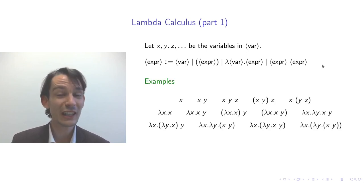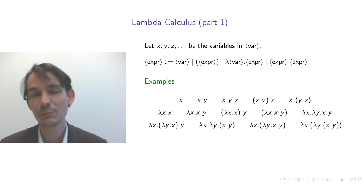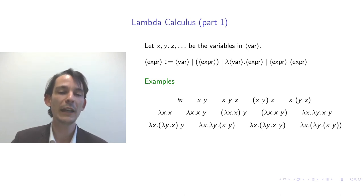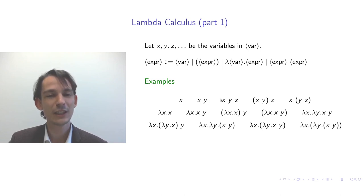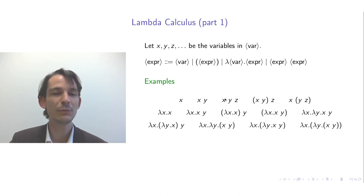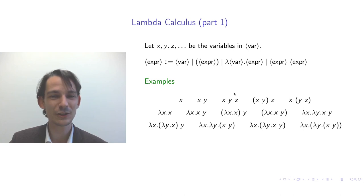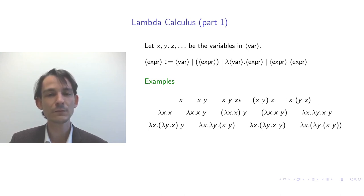Examples generated by this grammar include single standing variables like x, or two variables x and y applied — so x applied to y. With three variables x, y, z, this might be an ambiguous expression, because application is a binary operator. Either we first apply y to x and then apply z to the result, or we first apply z to y and then apply that result to x.